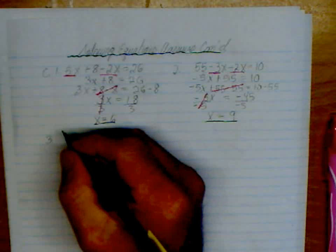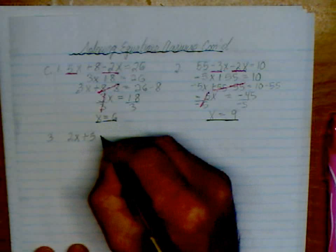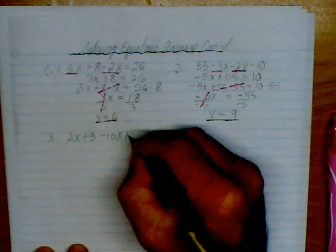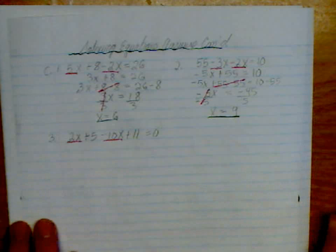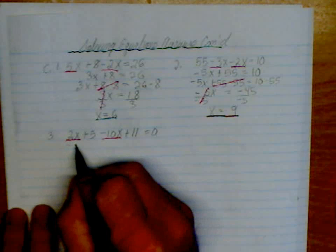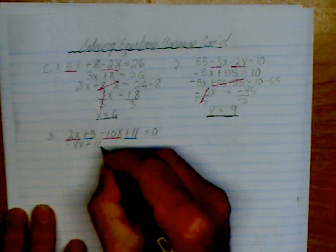Number 3. 2x plus 5 minus 10x, let's see, plus 11 equals 0. So we're just going to deal with our like terms first. I've got more negatives than positives, so this is going to be a negative 8x. And our constants are like terms as well, so that will be plus 16.